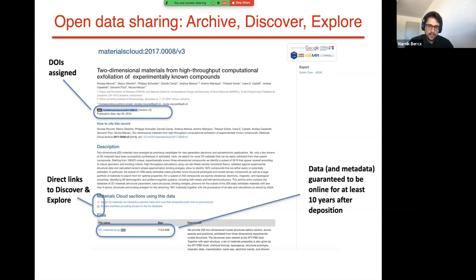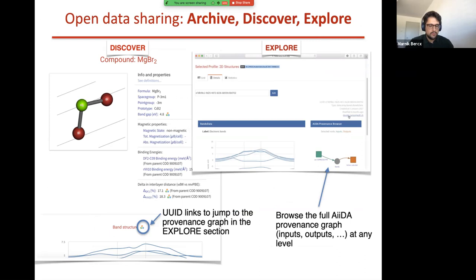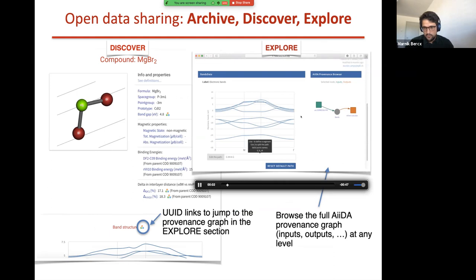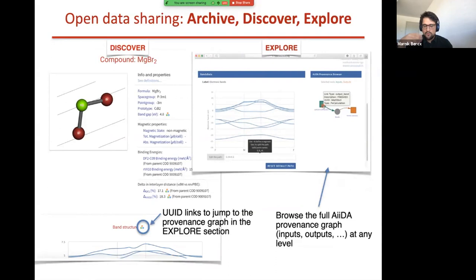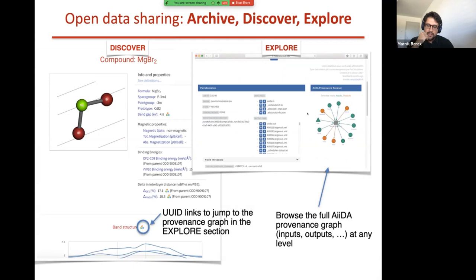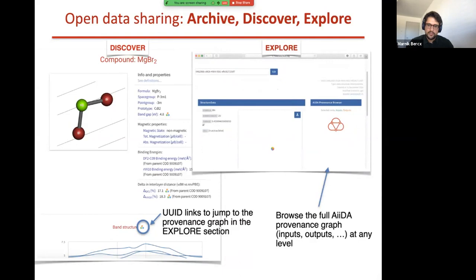If you run your calculations using AiiDA, you can add direct links to the Discover and Explore sections for your dataset. The Discover section provides an interface where you can define properties of your materials that are easily visible and discoverable by people wanting to analyze your dataset. The Explore section — which we'll also use in today's tutorial — allows you to interactively explore the provenance graph of your calculations: you can start at a certain band structure, visualize it automatically, look at the calculation that ran it, examine the input and output files, view the structure used, download it, and continue navigating the full provenance interactively.